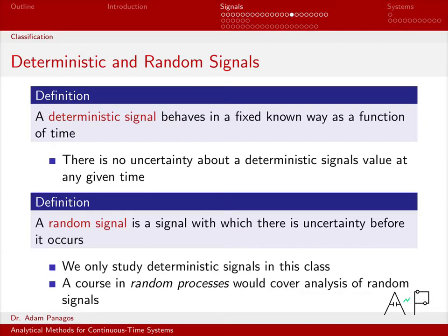Deterministic signals behave in a fixed way as a function of time. So we know exactly how they behave at every point in time. There is no uncertainty. We know its value everywhere.